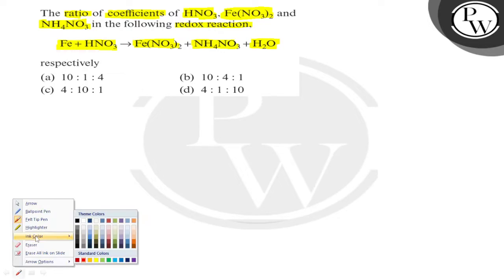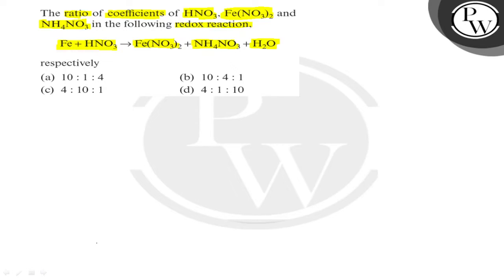Reaction is given to us and we need to balance this reaction first of all. Iron is turning to ferrous. Iron from elemental state turning to 2 plus state. Change in oxidation state is 2 and 1 Fe atom is there so valence factor will be 2.